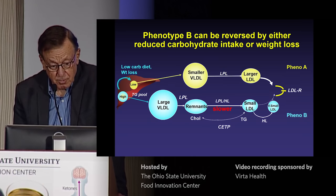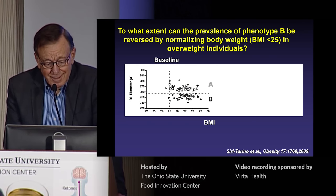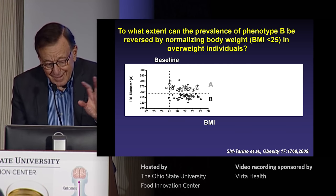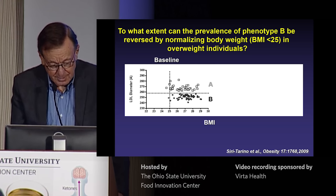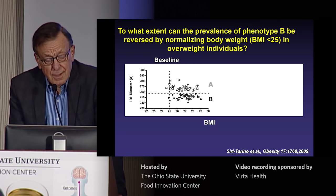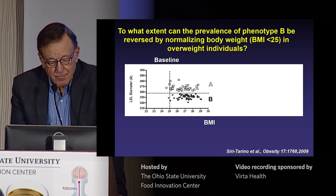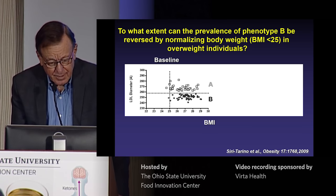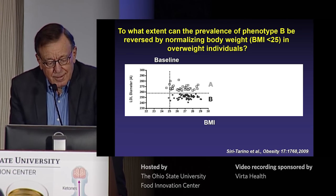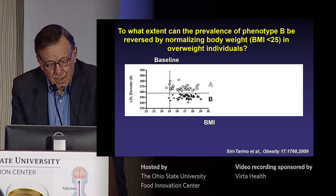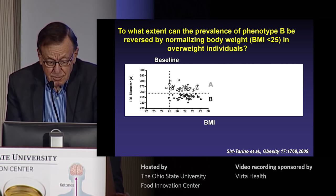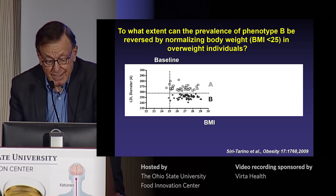Both carbohydrate reduction and weight loss can reverse phenotype B quite substantially. These convergent effects suggest they may operate through common pathways — specifically, by flipping hepatic metabolism out of the B mode into the A mode. In the last few minutes I want to present observations we made in conjunction with these studies that intersect with interest in ketogenic diets. We noticed in that study that we had more trouble getting phenotype B people to lose weight on the same level of calories, even though we measured caloric expenditure and physical activity.